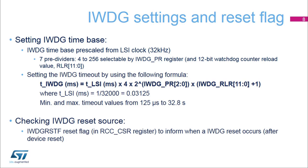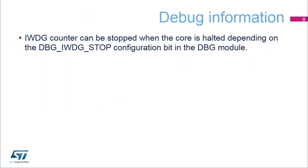Once a reset is generated by the IWDG peripheral, the corresponding flag, IWDG_RSTF, is set in the RCC CSR register to inform the source of the reset. When the microcontroller enters debug mode with the core halted, the IWDG counter either continues to work normally or stops, depending on the DBG_IWDG_STOP configuration bit in the DBG module MCU APB1 freeze register 1.